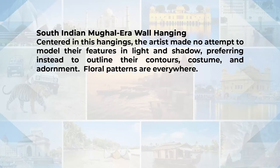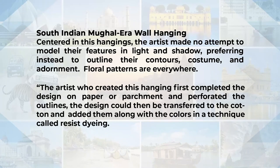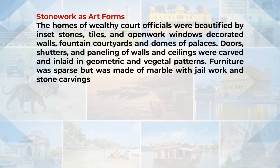In South India, the Mughal era wall hangings are very popular. These hangings feature artists who made no attempt to model features in light and shadow, preferring instead to outline contours and costumes, adorning them with flower patterns. The artist first completed the design on paper or parchment, perforated the outlines, and then transferred the design to cotton using a technique called resistine. Stonework is popular all over India — homes of wealthy court officials were beautified with inset stones, tiles, window work, fountain courtyards and domes of palaces. Doors, shutters and wall panelling were carved and inlaid in geometric and vegetative designs, with marble furniture featuring jali work and stone carvings.